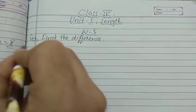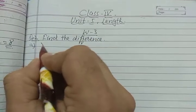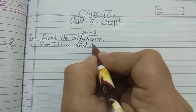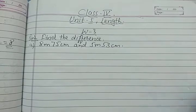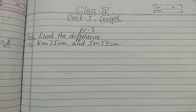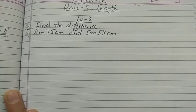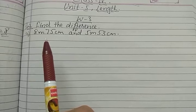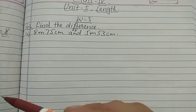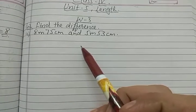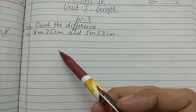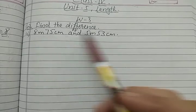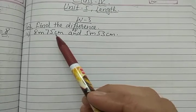The first question: we have to subtract 8 meter 75 centimeter and 5 meter 53 centimeter. Our first step is to see which length is greater, because in subtraction the greater length is written over the smaller length. In the previous video I told you how to compare given lengths — we compare the greater units, that is 8 meter and 5 meter. So which one is greater? 8 meter.